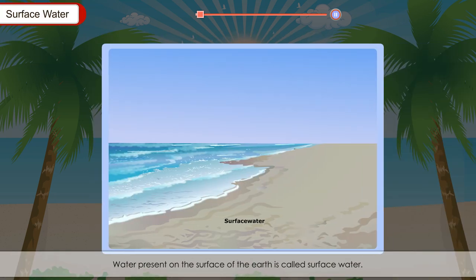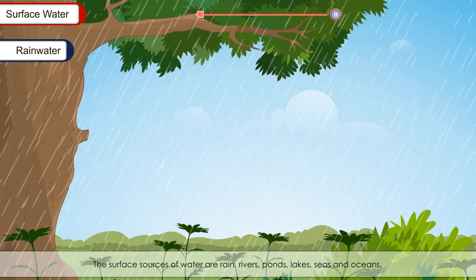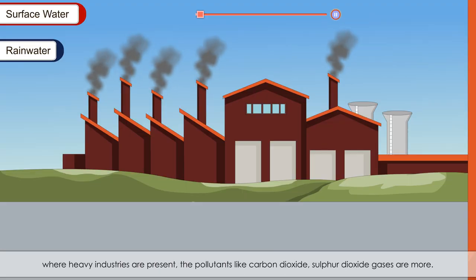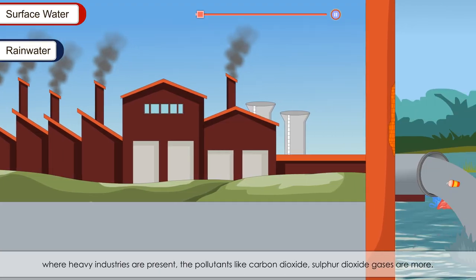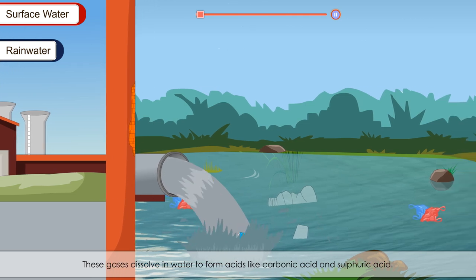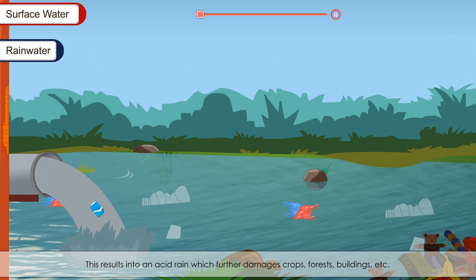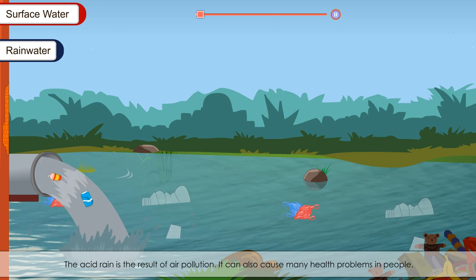Surface water is water present on the surface of the earth, from sources such as rain, rivers, ponds, lakes, seas and oceans. Rainwater is the purest form of naturally occurring water. However, at places with heavy industries, pollutants like carbon dioxide and sulfur dioxide dissolve in rainwater to form carbonic acid and sulfuric acid, resulting in acid rain, which damages crops, forests and buildings, and can cause health problems.